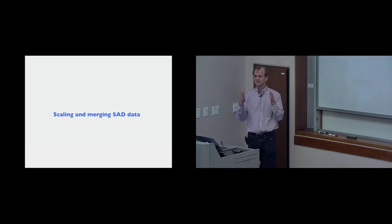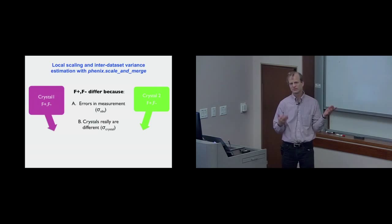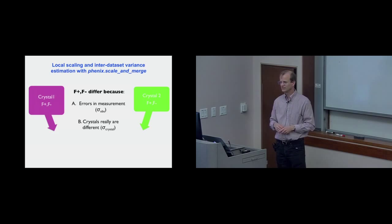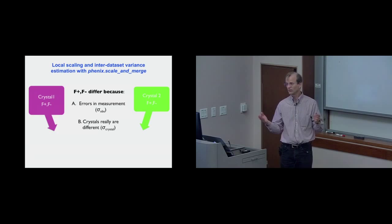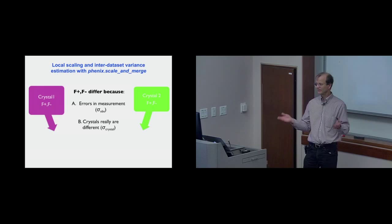Now, scaling and merging SAD data. We have multiple crystals or one crystal with multiple measurements of intensities, and we'd like to combine observations of I-plus and I-minus in a smart way to optimally measure our anomalous differences. The key idea is to describe what the sources of error are and then use those to do smart weighting of the whole system. The main sources of differences between F-plus and F-minus, aside from actual anomalous differences, are errors in measurement and the crystals being genuinely different — both of these are noise in this context.